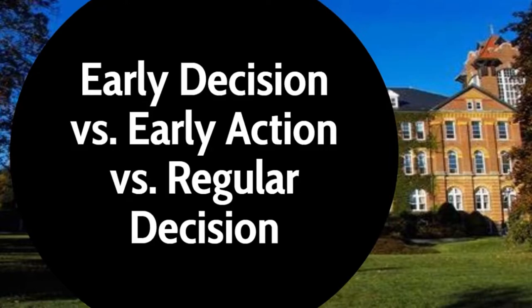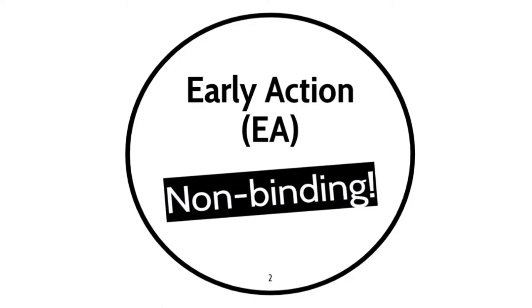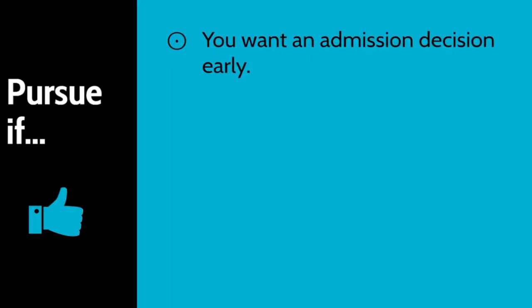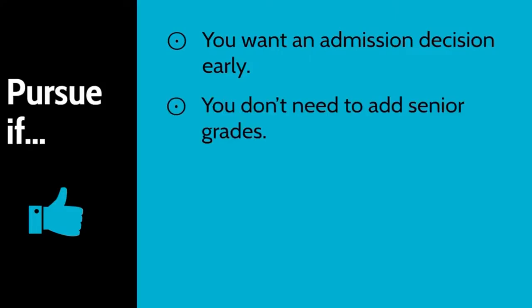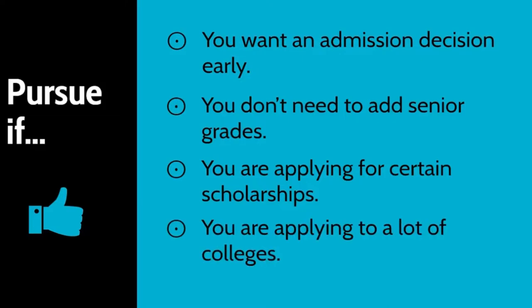Let's start with Early Action, EA. Early Action is non-binding, meaning that you are not obligated to attend the college if accepted. Pursue this if you want an early admission decision, you don't need to add senior grades to show that you are a worthy applicant, you are maybe applying for certain scholarships that may require that you apply early, and or you are applying to a lot of schools. If you're applying to at least 10 colleges, it is best to apply Early Action for some so that you are not rushing to finish your college applications.